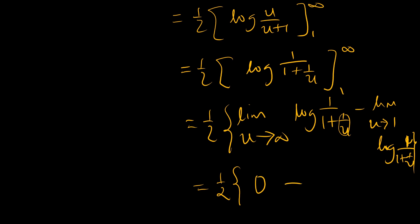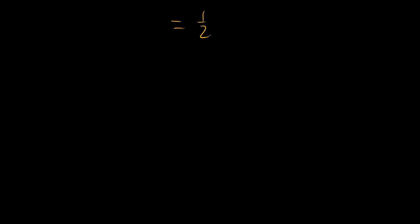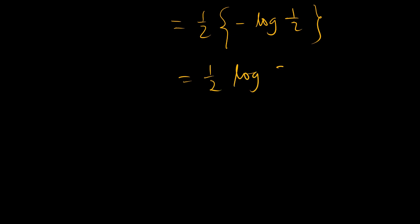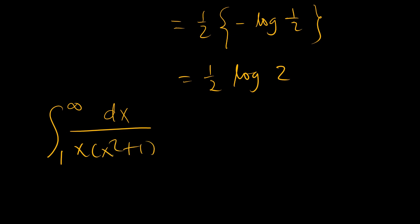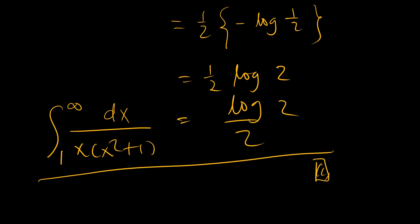As u tends to 1, 1 over 1 is 1, so it becomes ln(1 over 2). This gives us one-half of negative ln(1/2), which equals one-half of ln(2). So our integral from x equals 1 to infinity of 1 over x(x squared plus 1) equals log(2) over 2.